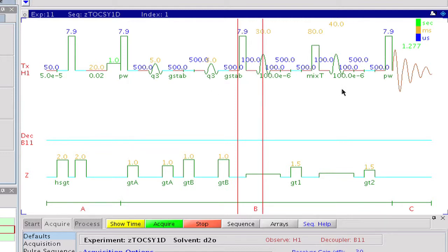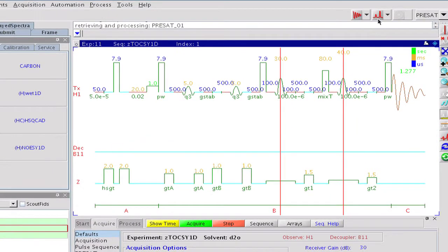Mixing is flanked by two zero-quantum suppression elements that filter out signals of a competitive process that frequently causes multiplet distortions. In every selective experiment, the key step is to define the site and the bandwidth of the selective RF pulse.